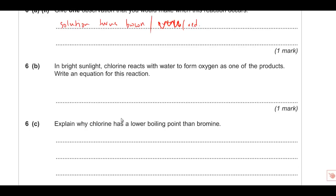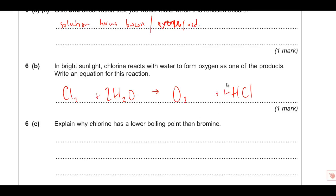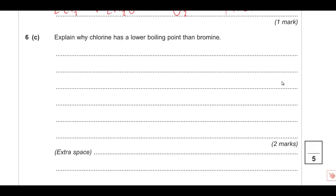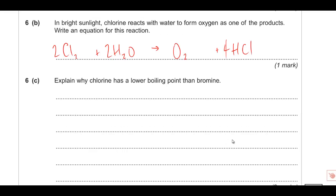In bright sunlight, chlorine reacts with water to form oxygen. The equation is 2Cl2 + 2H2O → O2 + 4HCl. Balance with a 2 on Cl2, 2 on H2O, and a 4 on HCl. If you're not comfortable with equations, you've only lost a couple of marks at this point.